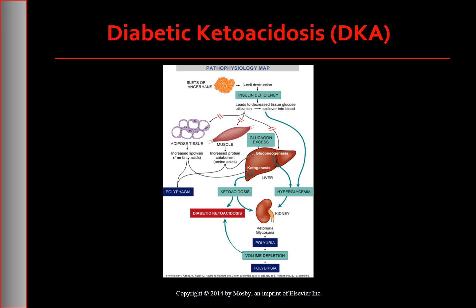This is the schematic representation of the pathophysiology of diabetic ketoacidosis. When the circulating supply of insulin is insufficient, glucose cannot be properly used for energy. The body compensates by breaking down fat stores as a secondary source of fuel. Ketones are acidic byproducts of fat metabolism that can cause serious problems when they become excessive in the blood. Ketosis alters the pH balance, causing metabolic acidosis to develop.